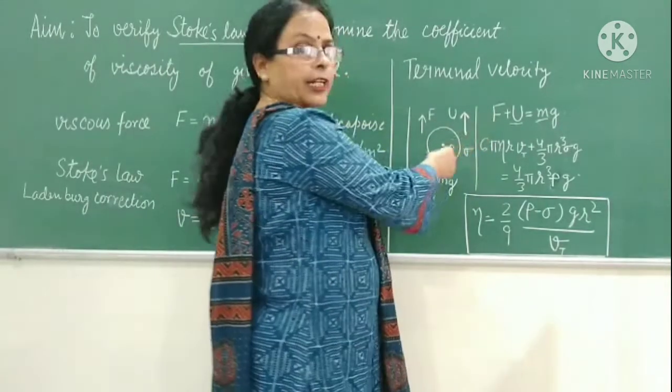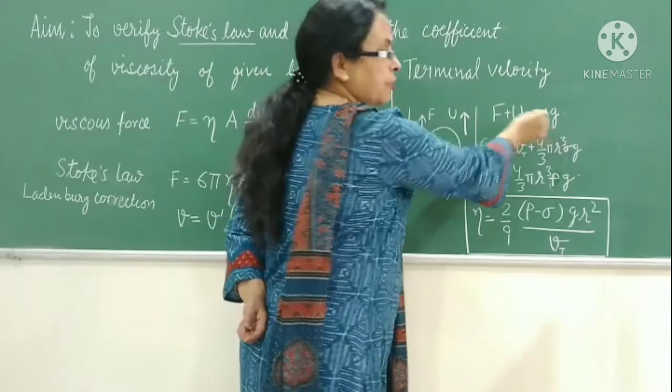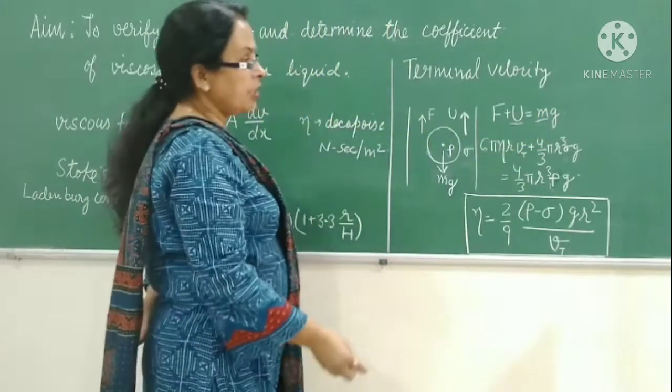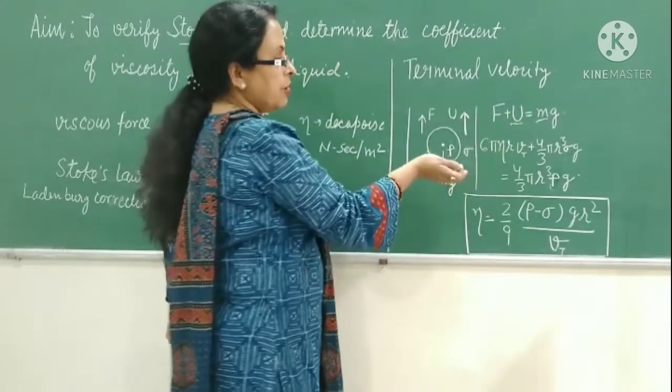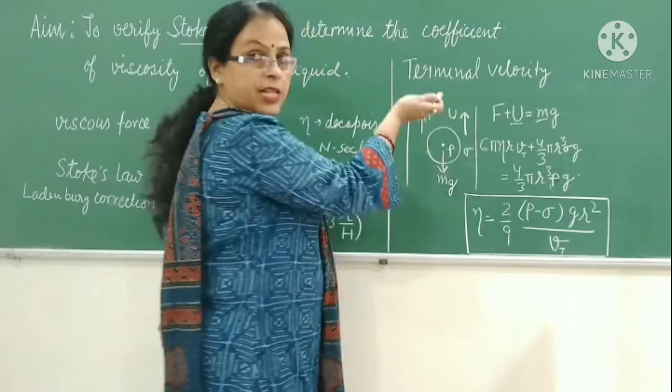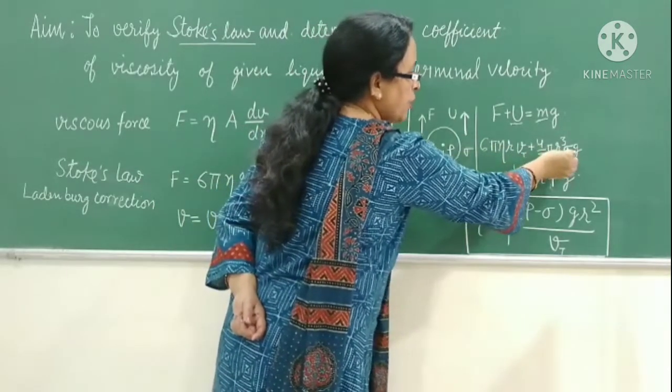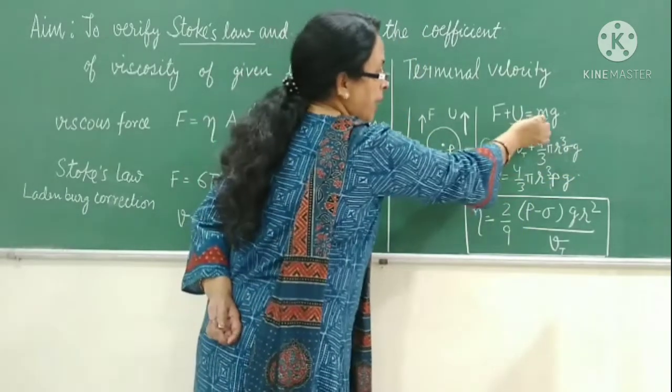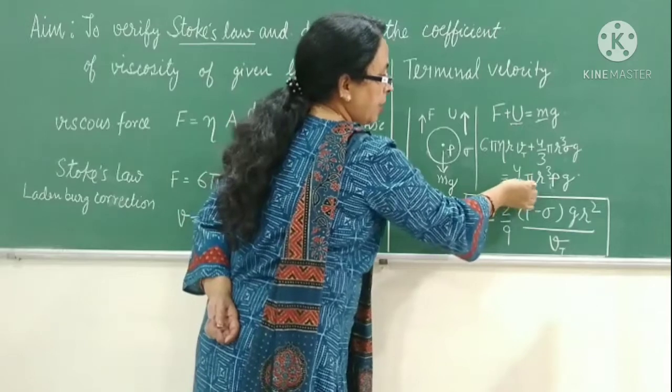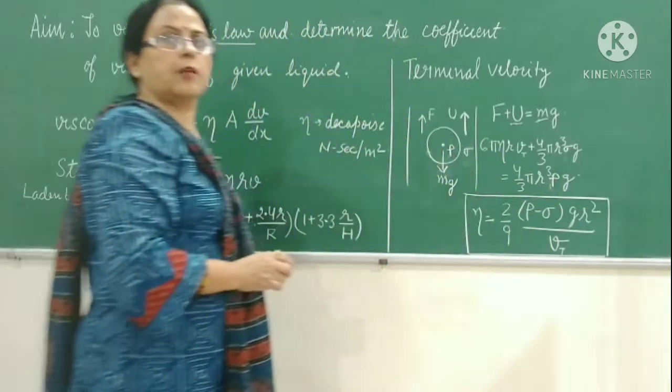When the body attains terminal velocity, F plus U, upward acting forces, is equal to downward acting force, which is W. F is the upthrust, which is the force due to the displaced liquid. This is equal to 4 by 3 pi R cube sigma g, where sigma is the density of the liquid. And W can be written as 4 by 3 pi R cube rho g, where rho is the density of the spherical balls and R is the radius of the spherical balls.